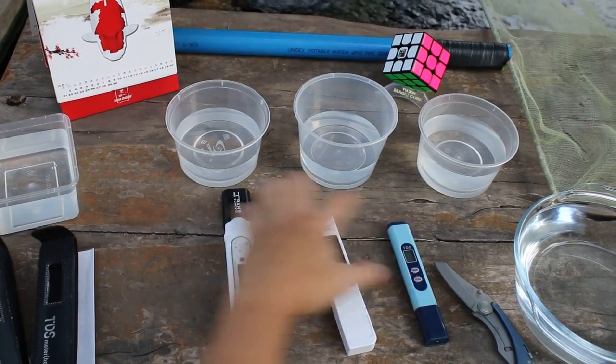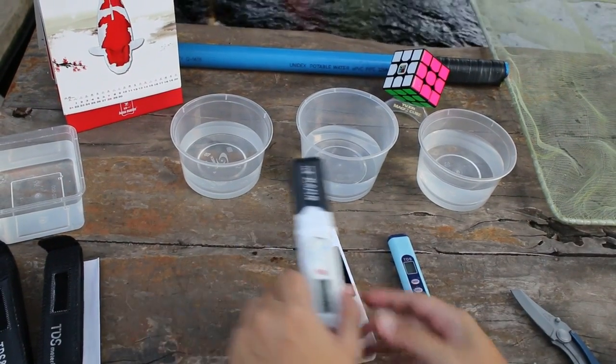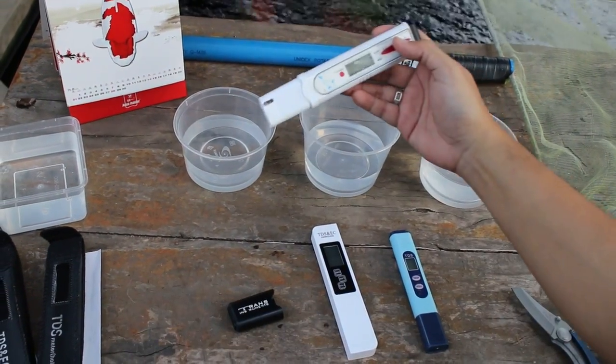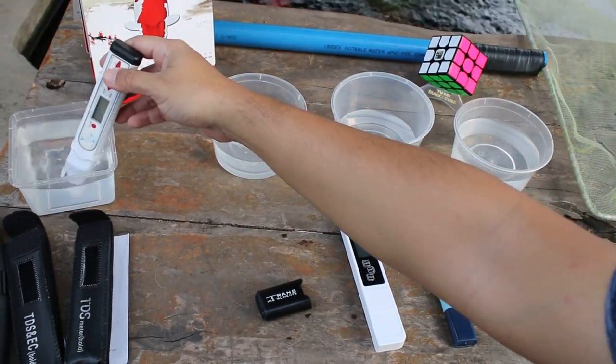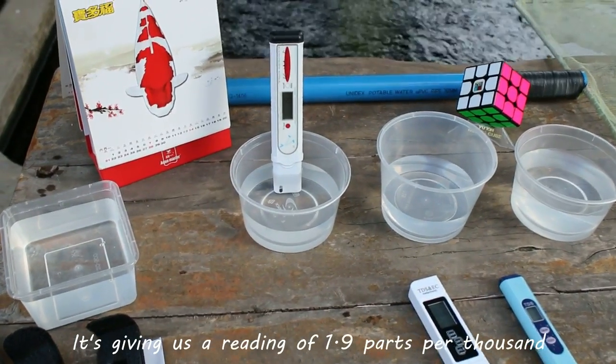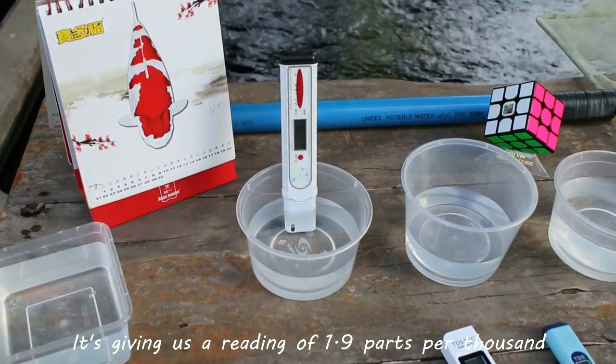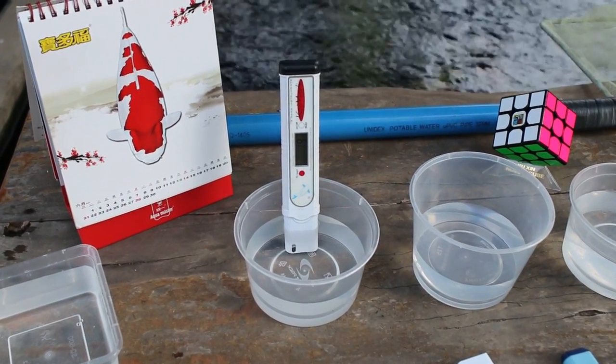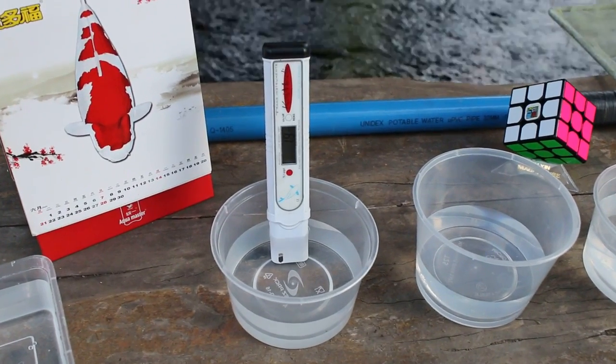We'll try first with the coin medic. We'll do a washing first. It's giving us a reading of 1.9 parts per thousand. I've set it to parts per thousand a while back, so there's your reading on our first unit.